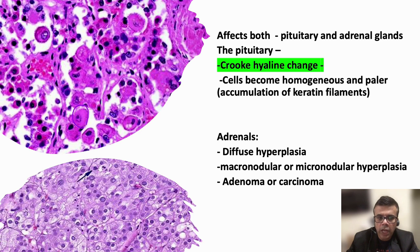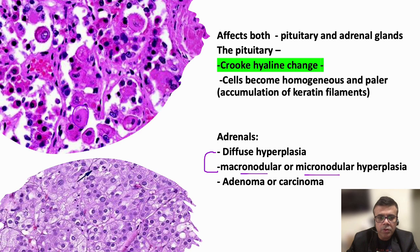The adrenal gland will show diffuse hyperplasia, which could also be nodular — either macronodular or micronodular hyperplasia — driven by ACTH from the pituitary adenoma. Alternatively, circumscribed lesions such as adrenal adenomas or carcinomas may be seen as direct causes of Cushing syndrome.